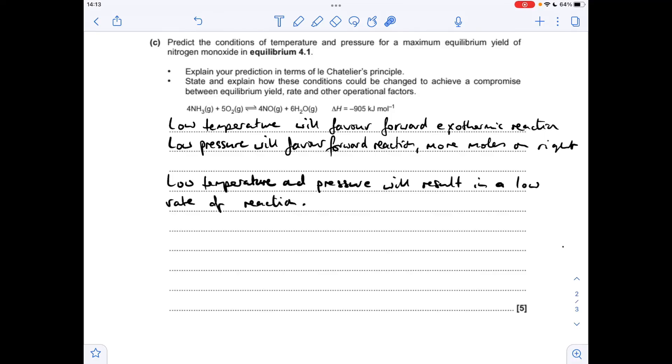So the problem with increasing both the temperature and the pressure is they're both going to favour the reverse reaction and drop the equilibrium yield of the nitrogen monoxide. And the other thing the company would need to bear in mind would be, as you increase the temperature, you're increasing your energy consumption, and increasing the pressure increases safety risks, and it's also difficult or expensive to achieve.